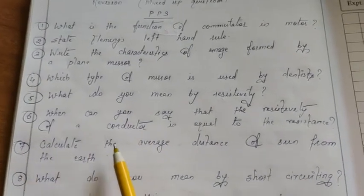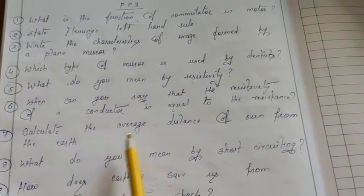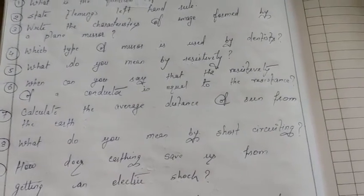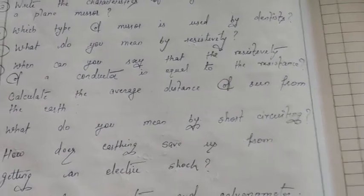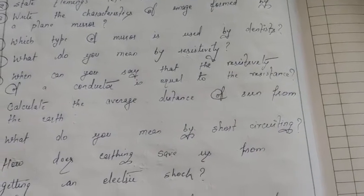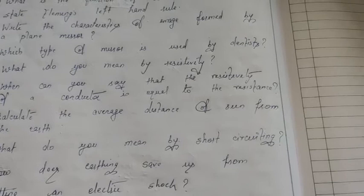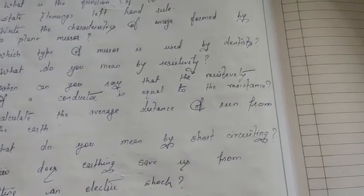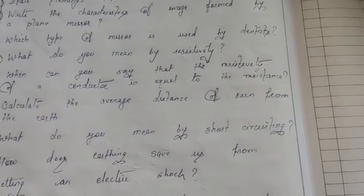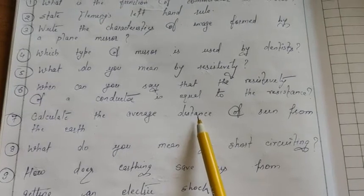Question no. 7: Calculate the average distance of the sun from the earth. This is a very easy and interesting question. To calculate the distance, you should know the formula: distance = speed × time. The speed of light is 3 × 10⁸ meters per second, and the time taken by sunlight to reach the earth from the sun is approximately 8 minutes.